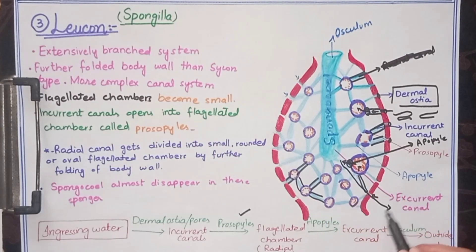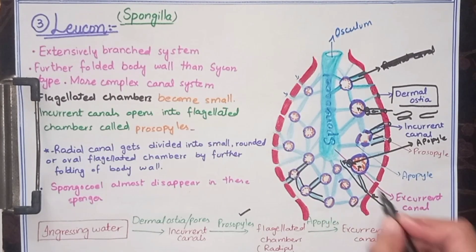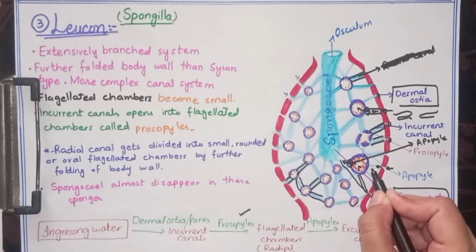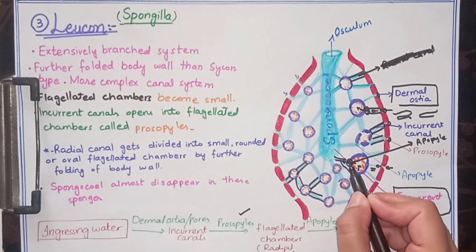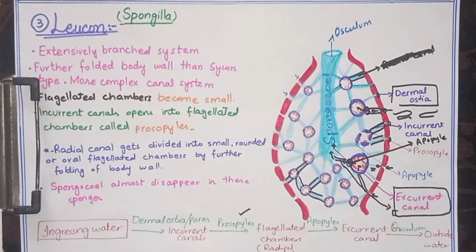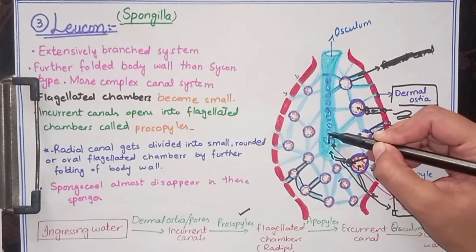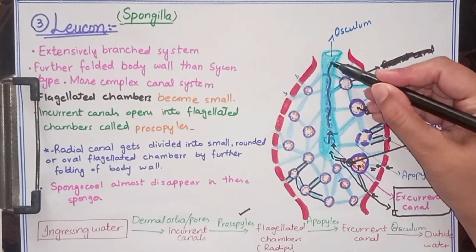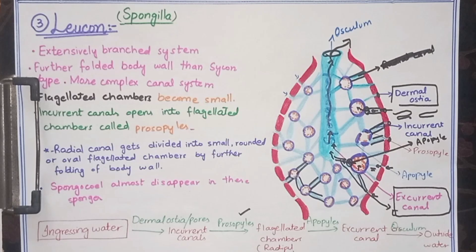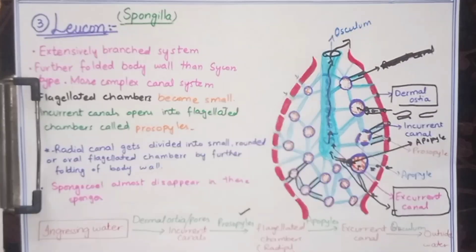When water is released from the radial canal, the canal responsible for carrying that water out is known as the excurrent canal. This excurrent canal is joined with a small cavity known as the spongocoel. From the excurrent canal, water enters the spongocoel, and from the spongocoel there is another opening known as the osculum, through which water is released out. Basically in all body forms of sponges, there are pores present which are responsible for the movement of water.